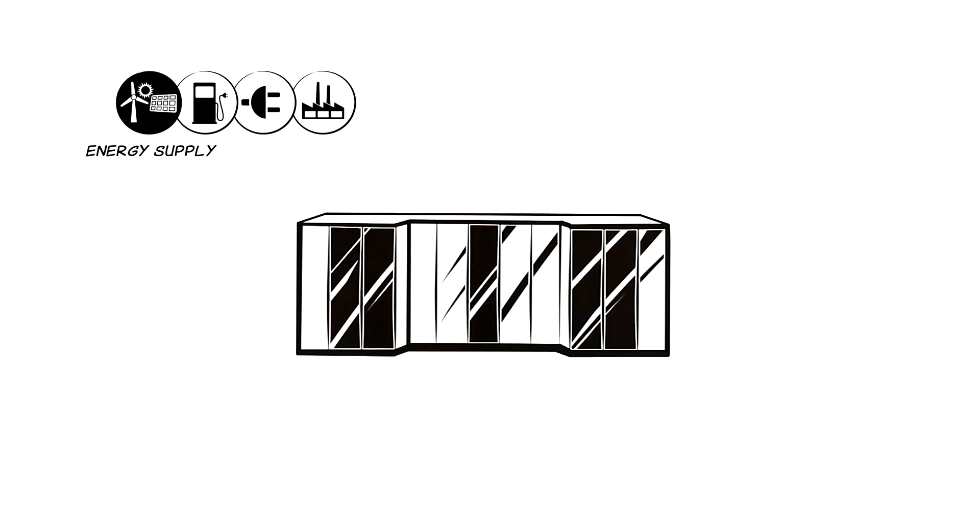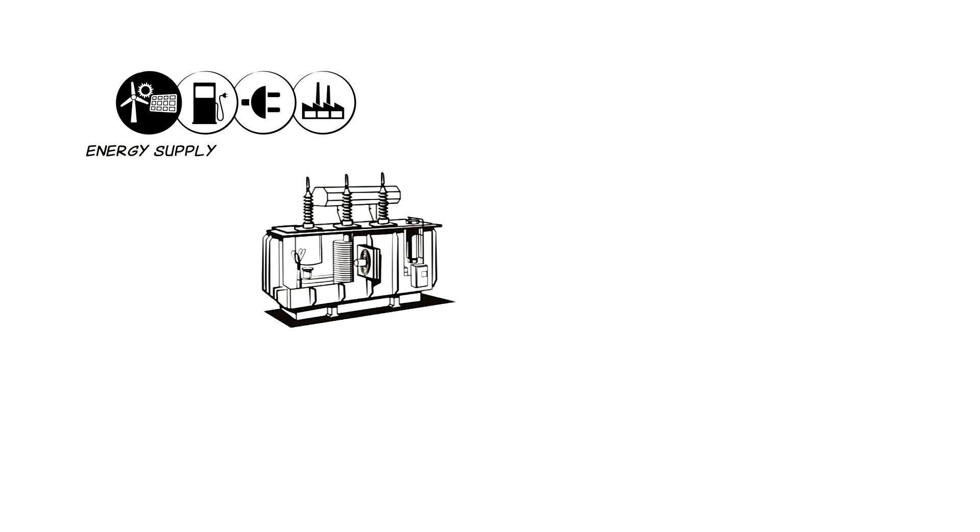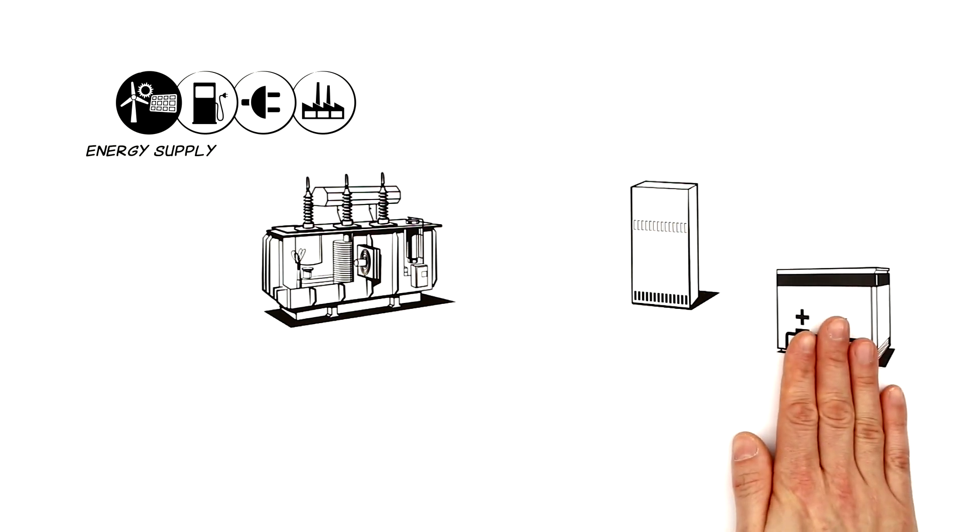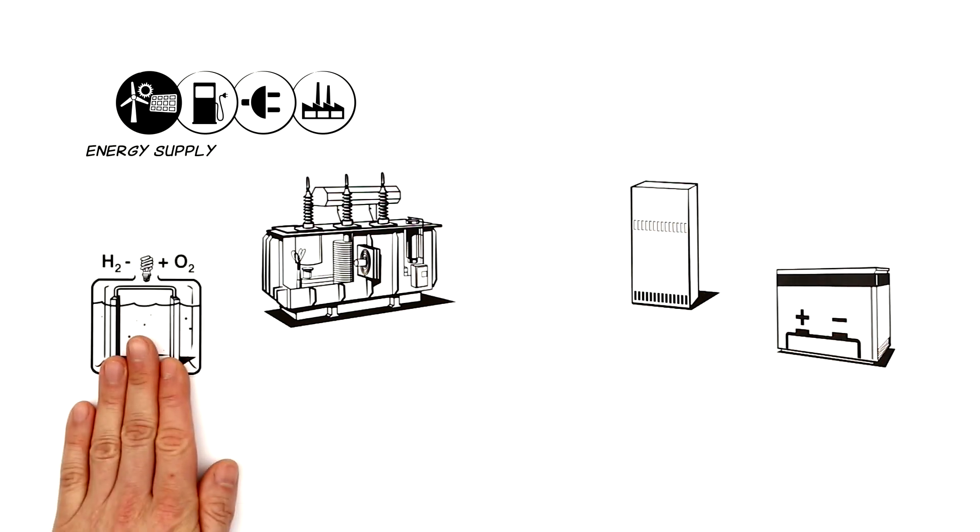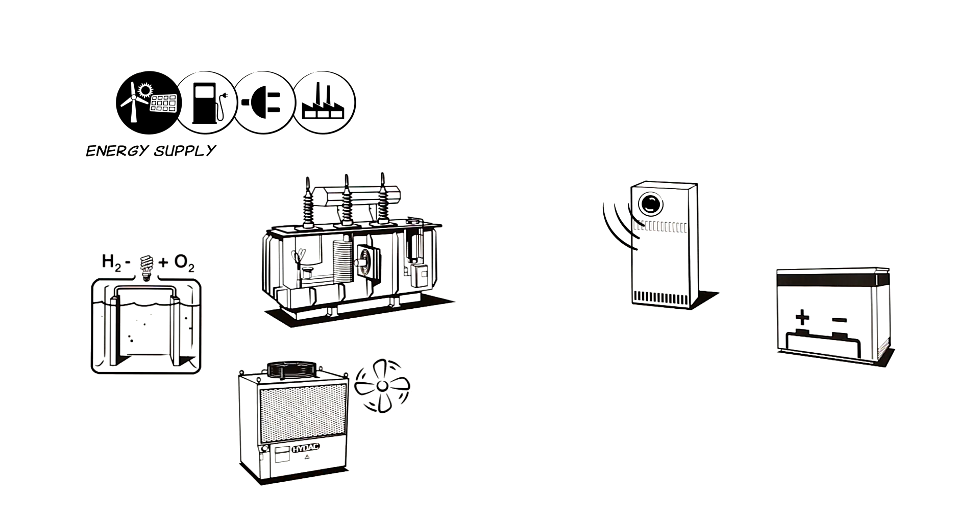In energy supply, we consider the question of where the energy for machines and vehicles comes from. This could encompass transformers, converters, battery storage devices and electrolyzers, for which Hydeck offers cooling systems, sensors,